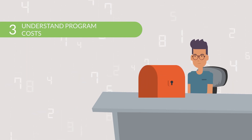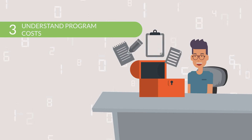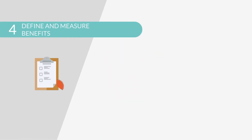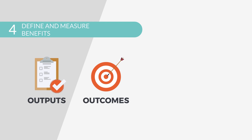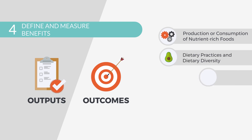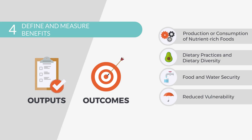The SEAMS document provides a comprehensive and fully customizable set of cost data collection tools for estimating these costs. Next, the analyst must understand the project outputs and outcomes. These include a range of benefits related to changes in knowledge and practice for the production or consumption of nutritious foods, changes in dietary practices and dietary diversity, improved food and water security, reduced vulnerability, and enhanced gender empowerment.